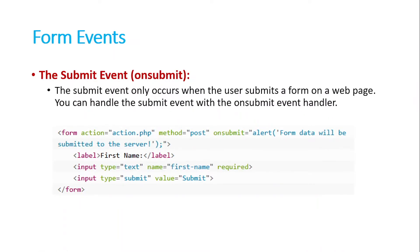Then comes the submit event, which is handled by the onsubmit handler. This occurs when somebody submits a form using the input type submit button. When you click the submit button, the submit function will be executed and we can use any method or function to show a 'submission successful' message or something like that. So this basically occurs when somebody submits a form.